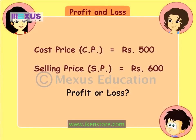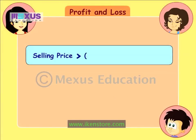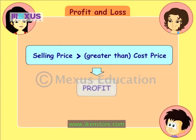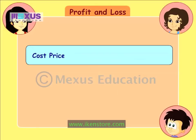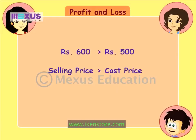You see, J.C., whenever the selling price is more than the cost price, then we make a profit. And when the cost price is more than the selling price, we make a loss. That means, by selling the puppy, we made a profit because the selling price is more. Correct.